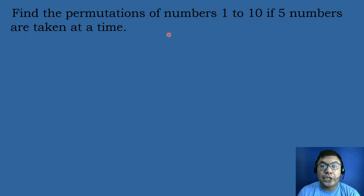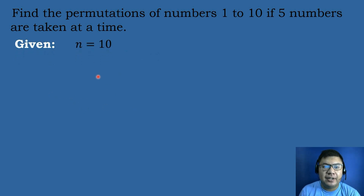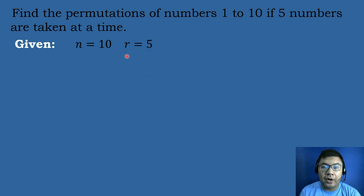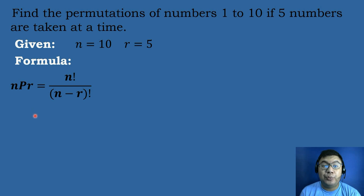Let's have our first example. Find the permutation of numbers 1 to 10 if 5 numbers are taken at a time. We will be identifying the given. The value of N, which is the number of objects, is equal to 10 — the numbers 1 through 10. And the value of R, the number of objects we will select, is equal to 5. Then we will use the formula: NPR is equal to N factorial over the quantity N minus R factorial.